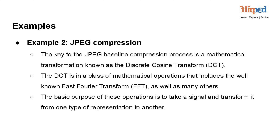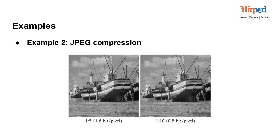In JPEG compression, the DCT is applied to blocks of pixels in the image, and the resulting frequency coefficients are quantized and compressed to reduce file size while maintaining acceptable image quality. The left side of the slide showcases the original image with a bit depth of 1.6 bits per pixel. This higher resolution image retains detailed information and offers higher image quality. However, it requires more storage space and may have larger file sizes. On the right side of the slide, a compressed version of the same image is displayed. Despite the reduction in bits per pixel to 0.8, the compressed image maintains a minimal difference in quality compared to the original.